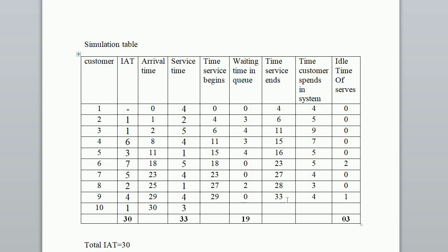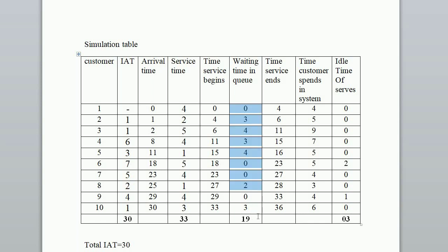For customer 10: arrival time is 30th minute, but the 9th customer ends service at 33rd minute, so service begins at 33rd minute. Waiting time is 33 minus 30 equals 3 minutes. Service time is 3 minutes, so time service ends at 33 plus 3 equals 36th minute. Time customer spends in system is 3 plus 3 equals 6 minutes. Idle time of server is 0. Total inter-arrival time: 30. Total service time: 33. Total waiting time in queue: 19. Total idle time: 3.